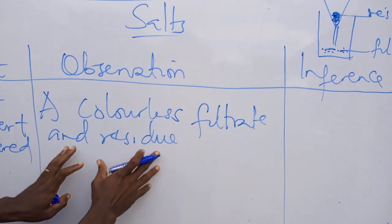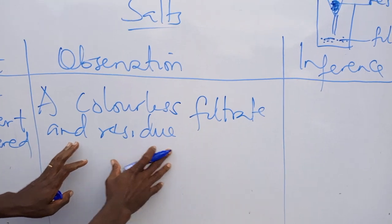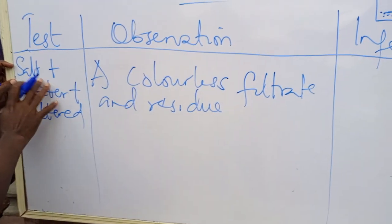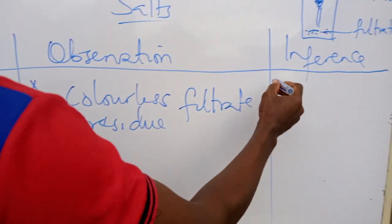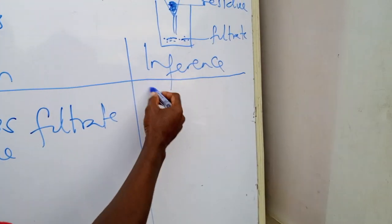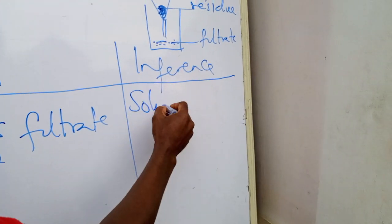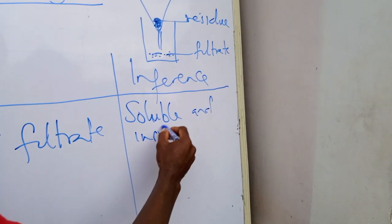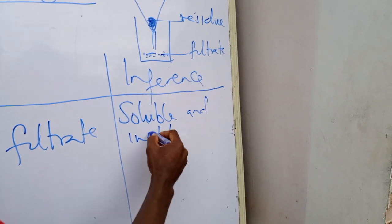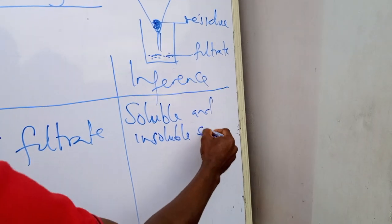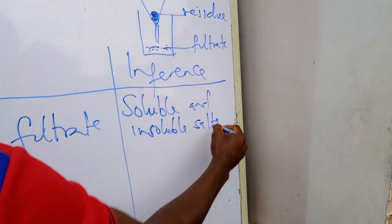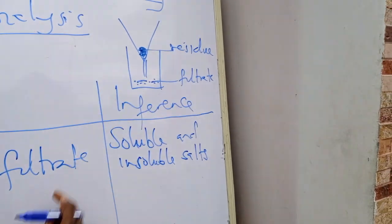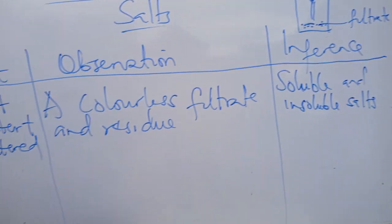If you have both a filtrate and residue, it means that the salt is a mixture of soluble and insoluble salts. The soluble salt becomes the filtrate and the insoluble salt becomes the residue.